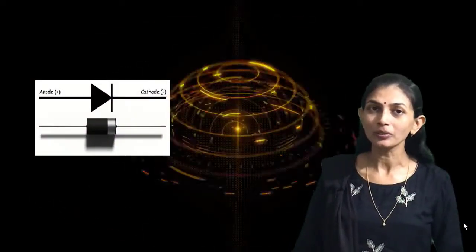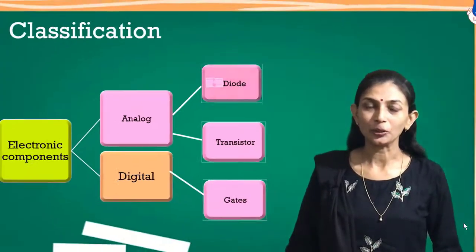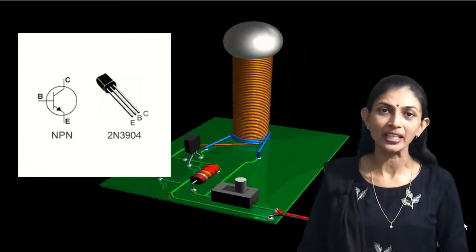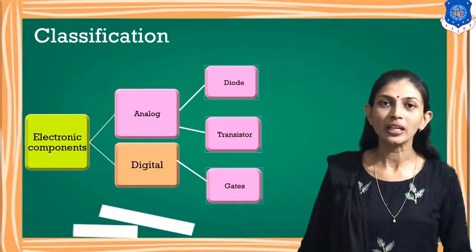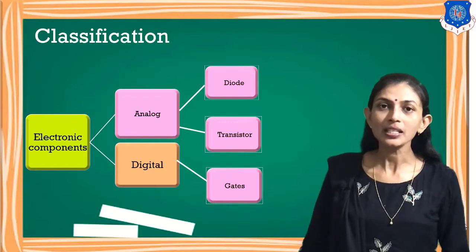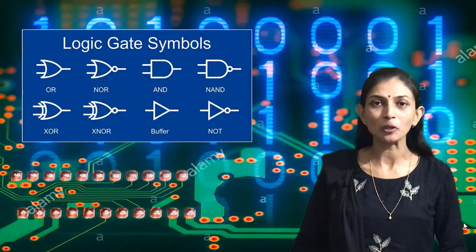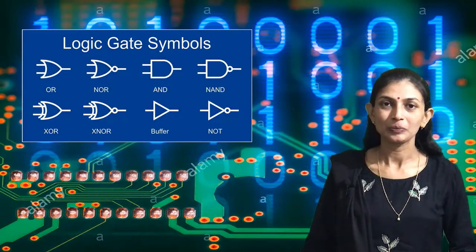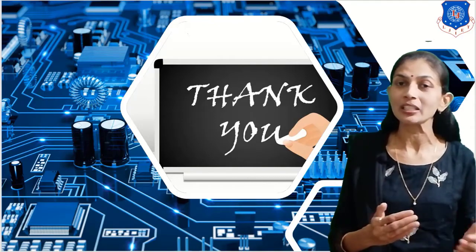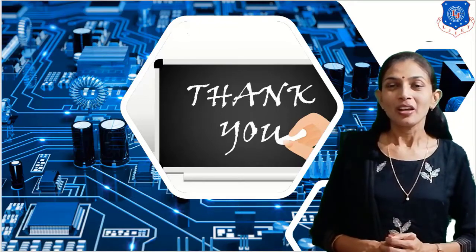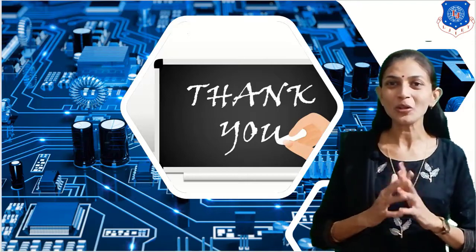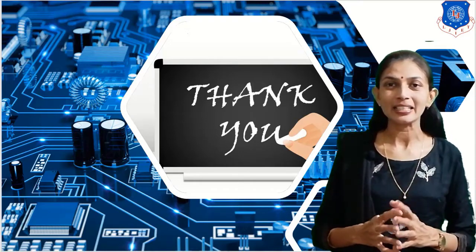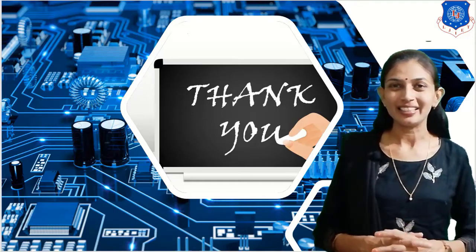The diode is a two-terminal device — anode and cathode — and is used as a switch. The next component we will study is the transistor, which is a three-terminal device used as a switch as well as an amplifier. These are the different types of digital logic symbols — gate symbols. The gate is a basic building block of all digital circuits. We will study different circuit designs using these three main components: diode, transistor, and gates. Keep watching my video lecture series of Basic Electronics to learn diode, transistor, and gates, and their circuits and applications in detail. Thank you.